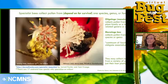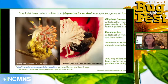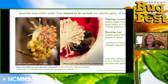Many native bees are pollen specialists, meaning they collect pollen from only one species, genus, or family — though they may collect nectar from many different plants. Oligolectic or mesolect bees collect pollen from one plant family or a few related genera or species, and monolectic bees collect pollen from a single species or genus.